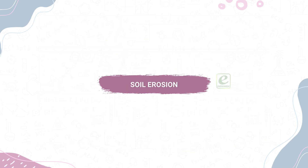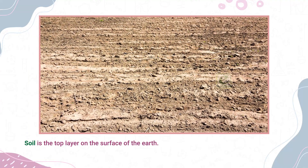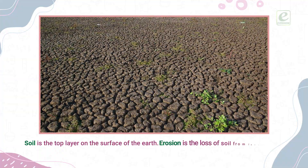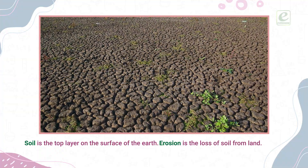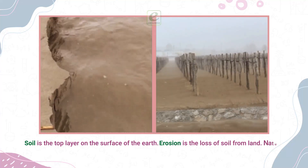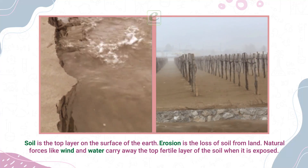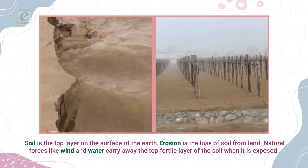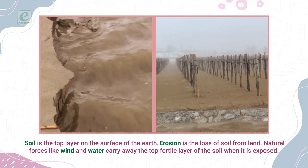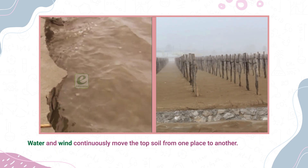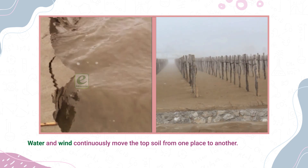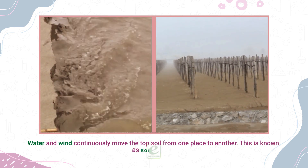Soil Erosion. Soil is the top layer on the surface of the earth. Erosion is the loss of soil from land. Natural forces like wind and water carry away the top fertile layer of the soil when it is exposed. Water and wind continuously move the top soil from one place to another. This is known as soil erosion.